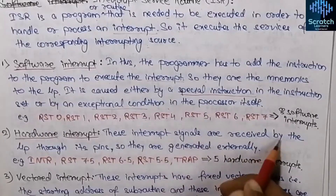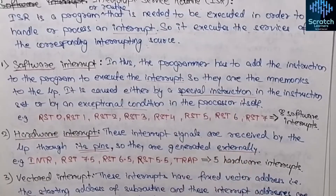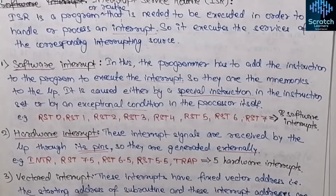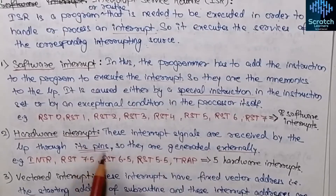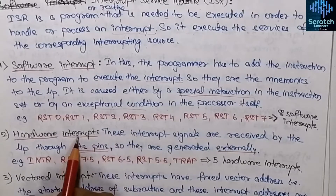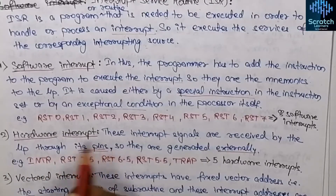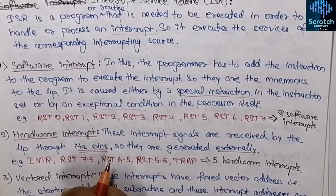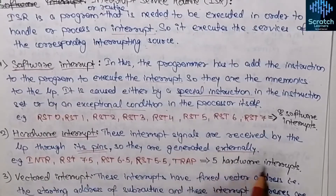The next classification is hardware interrupts. Hardware interrupts are the interrupt signals received by the microprocessor through its pins — they are generated externally. An external device initiates the hardware interrupt of the 8085 by placing an appropriate signal at the interrupt pin of the microprocessor. Since the interrupt signals are generated through its pins, it is called a hardware interrupt. The processor keeps on checking the interrupt pins at the execution of each current instruction, and if a valid interrupt is found, the processor accepts it.